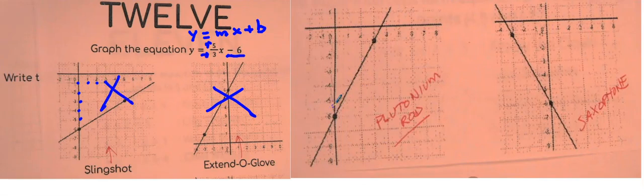Okay, let's try this one. Going up 5: 1, 2, 3, 4, 5, and then to the right 3: 1, 2, 3. This is it right here.